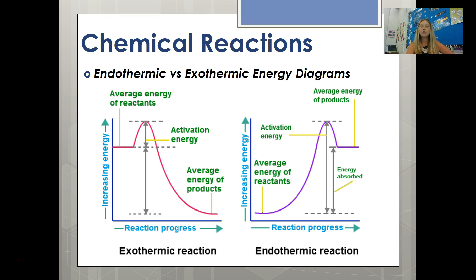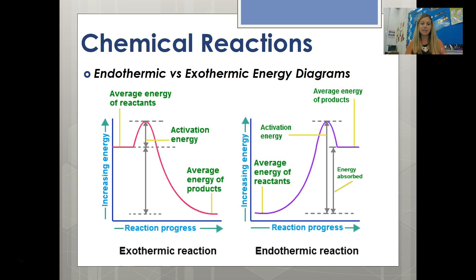Here are the energy diagrams for endothermic and exothermic reactions. Pause on this slide so that you can draw these for questions seven and eight. Make sure you label each axis — energy on the y-axis, the reaction on the x-axis — and label the reactants, products, and activation energy. In the exothermic diagram, reactants start with high energy and products end with low energy, so energy must have been released. In the endothermic diagram, the reactants' energy is low but the products are much higher, meaning energy was absorbed into the reaction.